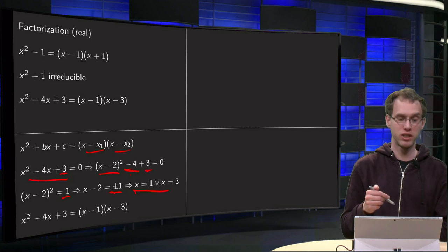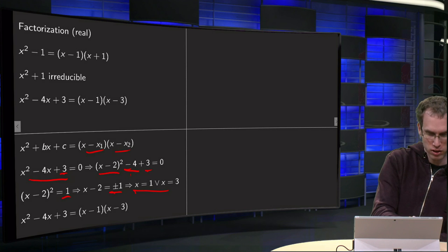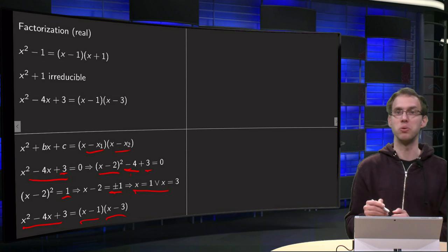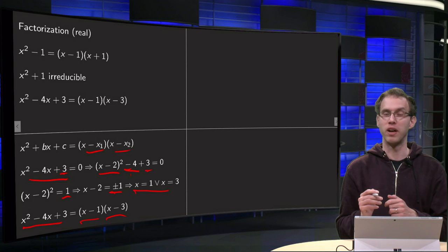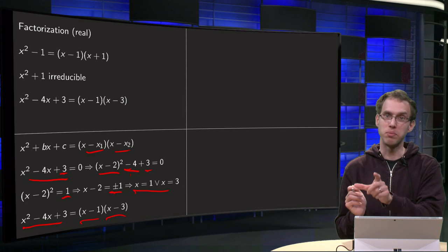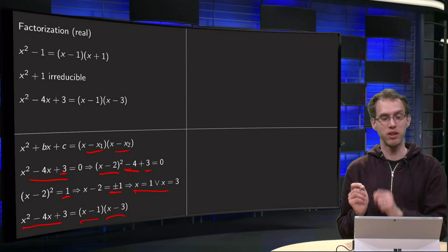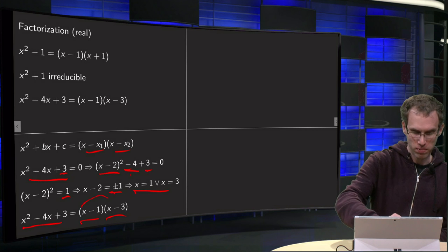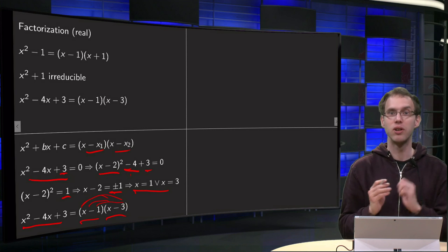And then I can write down the factorization: x² - 4x + 3 = (x - x₁)(x - x₂). Of course the order doesn't matter because (x - 3)(x - 1) is the same as (x - 1)(x - 3). Always check: we have x² - 3x - x = -4x + 3, so that's indeed correct.